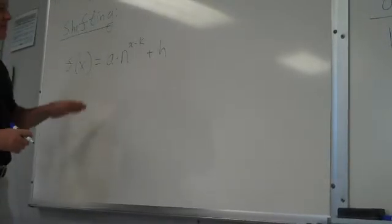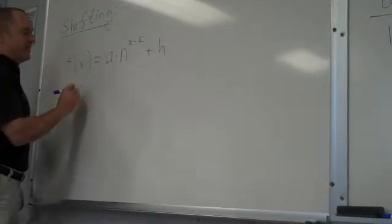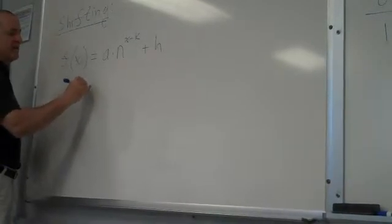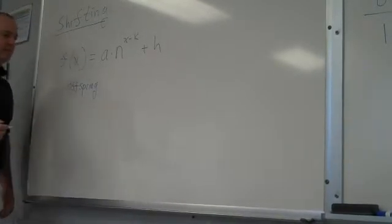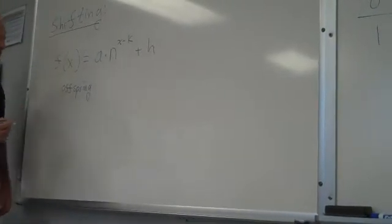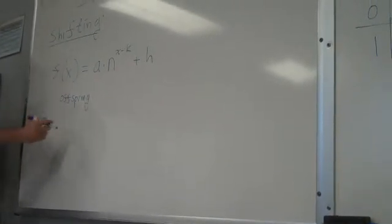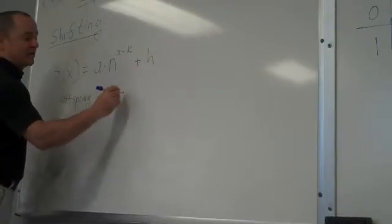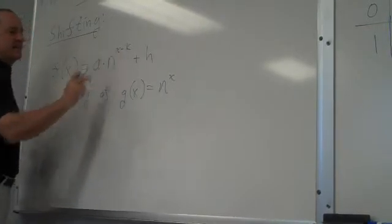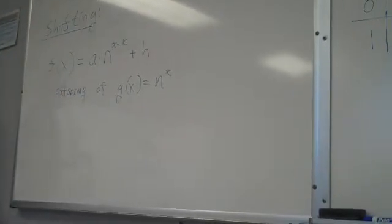And again, you have to be able to recognize that this is the offspring staying away from gender terms. Is that the mommy? I was using mommy, daddy, son, daughter yesterday. This is the offspring of a simpler function which I'll call g of x equals n to the x. Just the base, just the exponent without the shift.